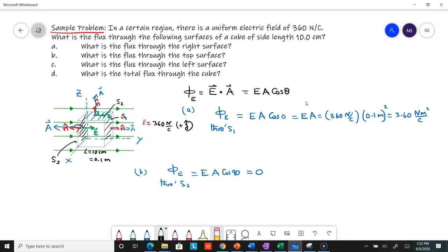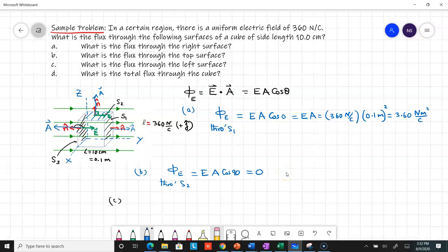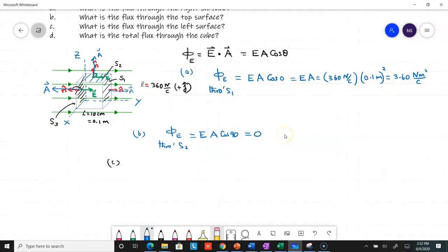In other words, the angle θ is 180 degrees. For part C, let me make some space. Part C is Φ_E = E·A·cos(180°).